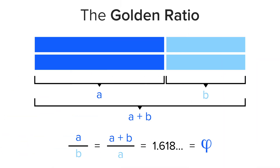How does the math actually work? The golden ratio exists when a line is divided into two parts and the longer part — part A — divided by the smaller part — part B — is equal to the sum of A plus B divided by A, which both equal 1.618. We just did math!